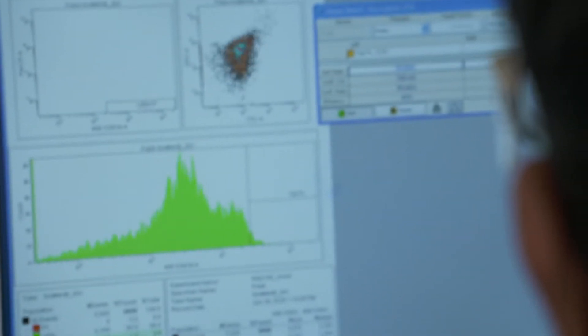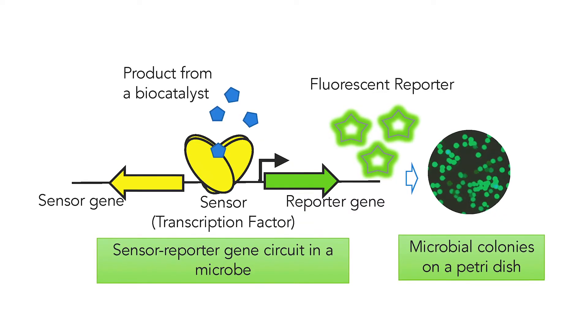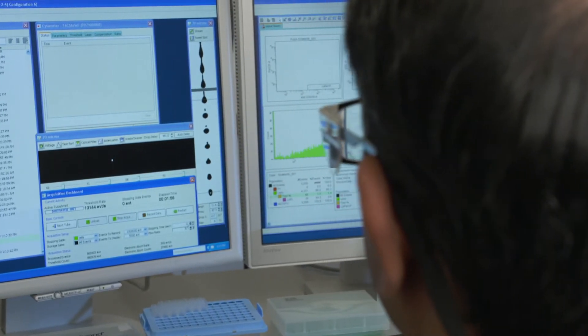Our smart microbial cell technology is really based on our custom-made sensor reporter gene circuit. This circuit is key to screening and detecting biocatalysts because it allows us to speed up the isolation of the top performers from a large population of thousands to millions of strain variants.